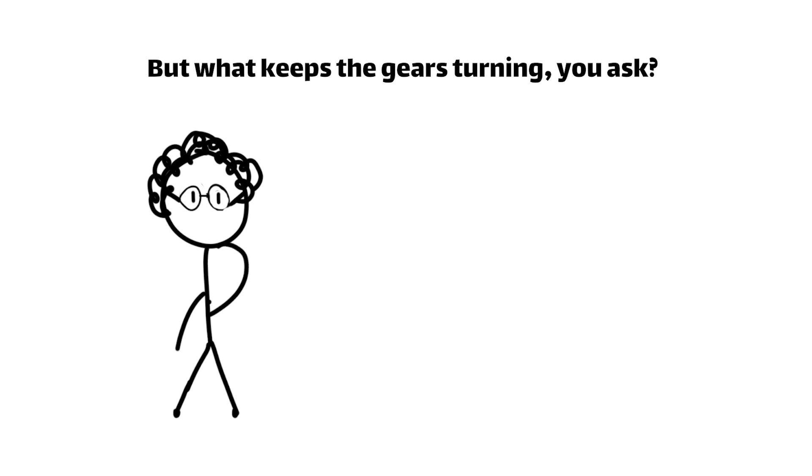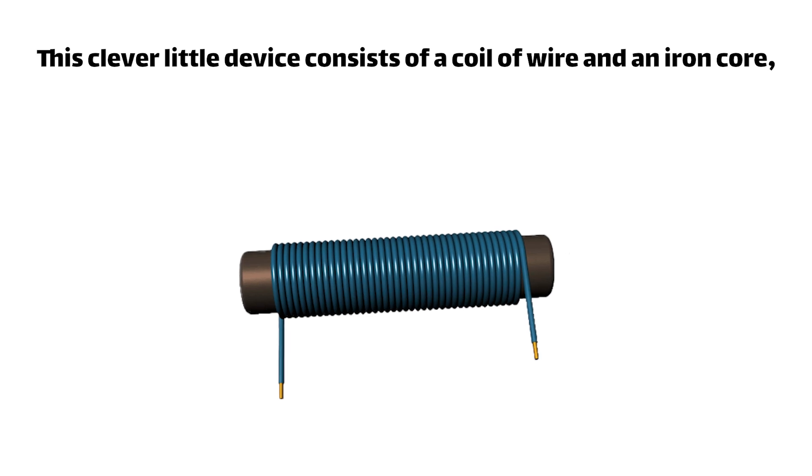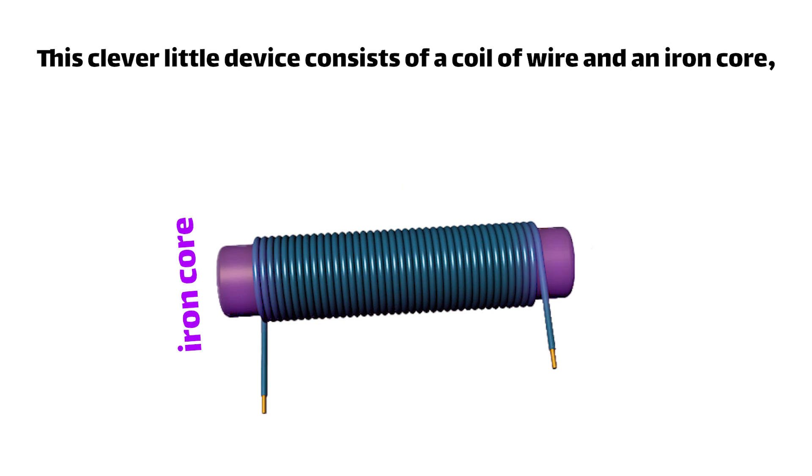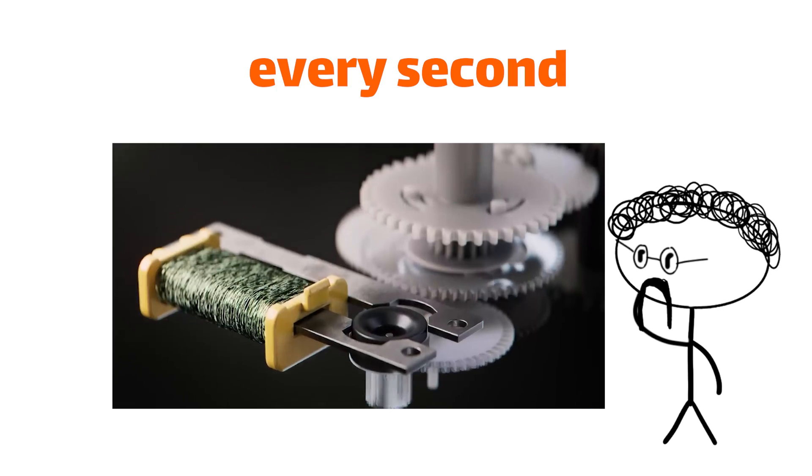But what keeps these gears turning, you ask? That's where the electromagnet comes in. This little doohickey consists of a coil of wire with an iron core, and it's responsible for giving the gear train a precise nudge every second.